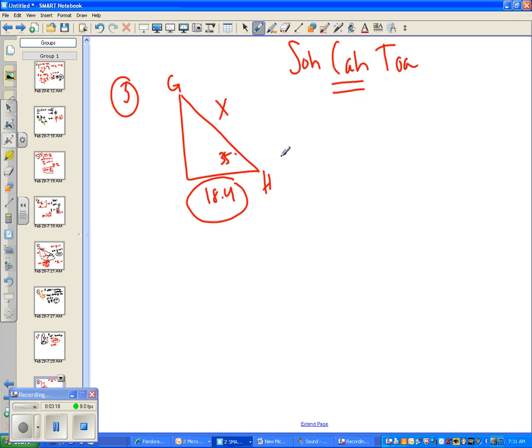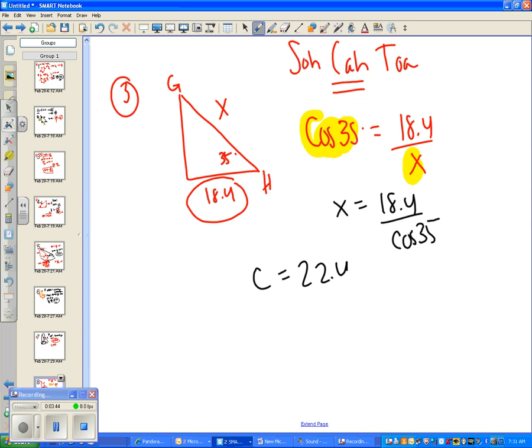Since 18.4 is adjacent, you're going to use cosine, and we have the hypotenuse. So it should have been cosine of 35 degrees equals adjacent over hypotenuse. When the variable is on the bottom, all you have to do is flip the two, so it's x equals 18.4 over cosine 35. You could use your calculator, and you should have gotten C, which is 22.46 inches.